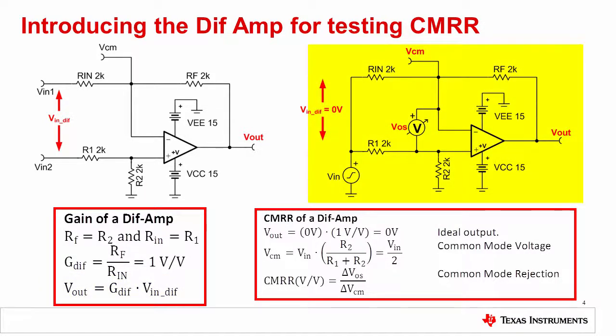In the second diagram, the differential inputs are shorted together, such that the differential input voltage is always 0 volts. The input source, VN, does not generate any differential input voltage, so the ideal output is 0 volts.